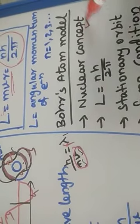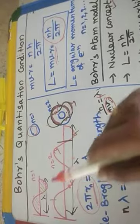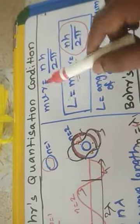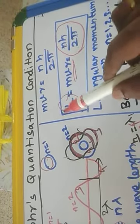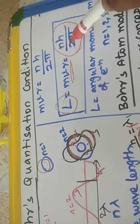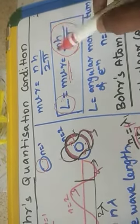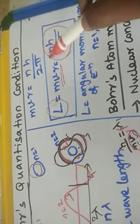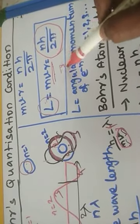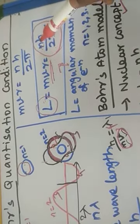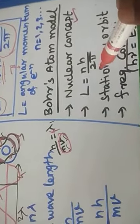Finally, Bohr gives postulates for the hydrogen atom. The first is the nuclear concept. The de Broglie wavelength must equal the circumference of the orbit. Substituting gives mvr = nh/2π, meaning the angular momentum of the electron equals nh/2π. For n = 1, 2, 3, 4, 5, we get the angular momentum in each corresponding orbit. For the seventh orbit (n=7), the angular momentum is 7h/2π.